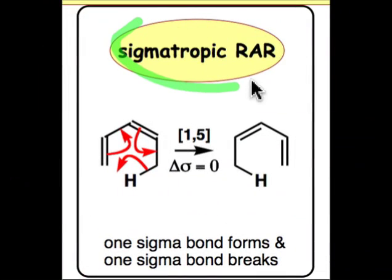In the sigmatropic rearrangements, the net number of σ bonds that are made and broken is zero. The reason for this is because there is one σ bond formation and one σ bond breaking. The way I like to view this σ bond formation and breaking is as though there's a σ bond migration.